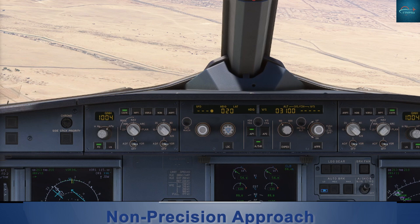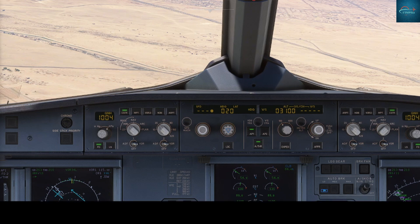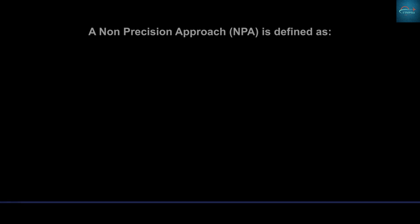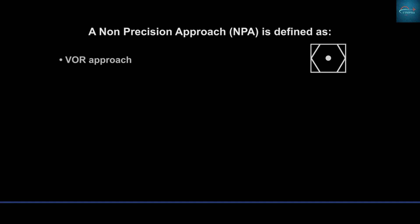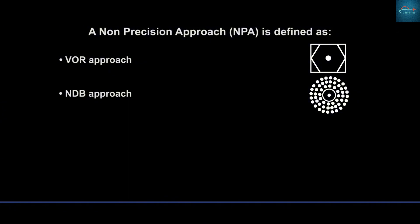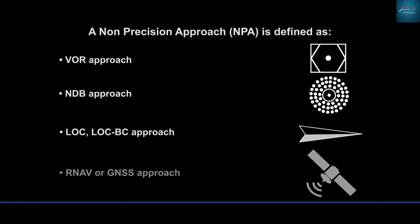Non-precision approach. A non-precision approach is defined as a VOR approach, NDB approach, Localizer back-course approach, LOC or GNSS approach.